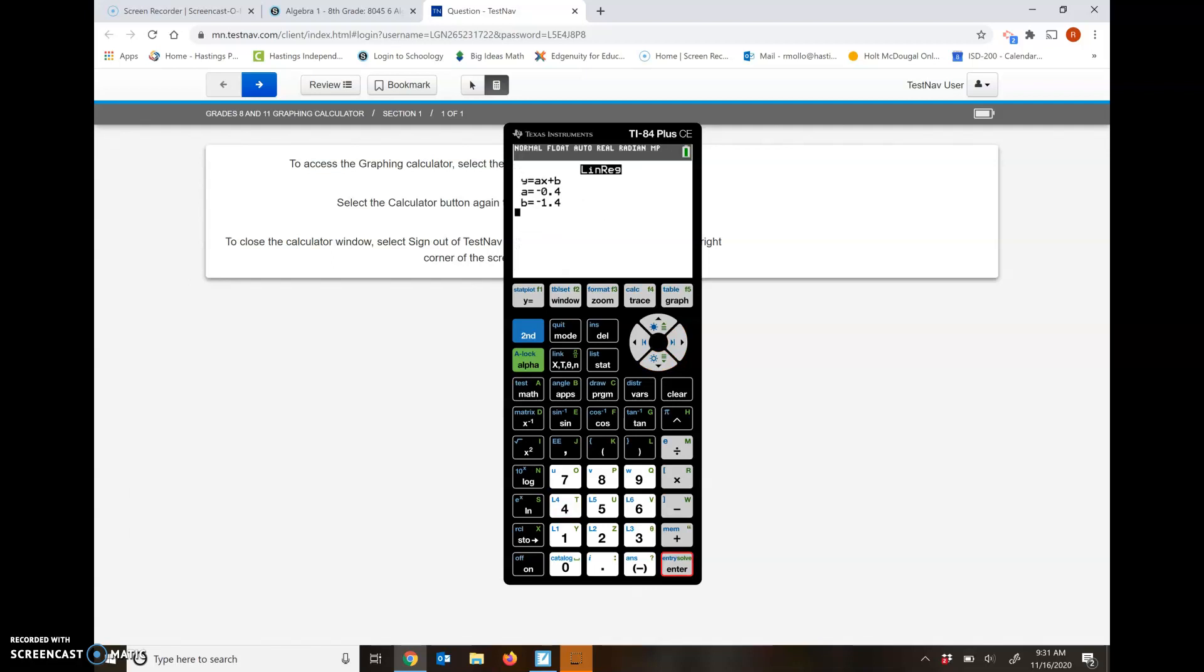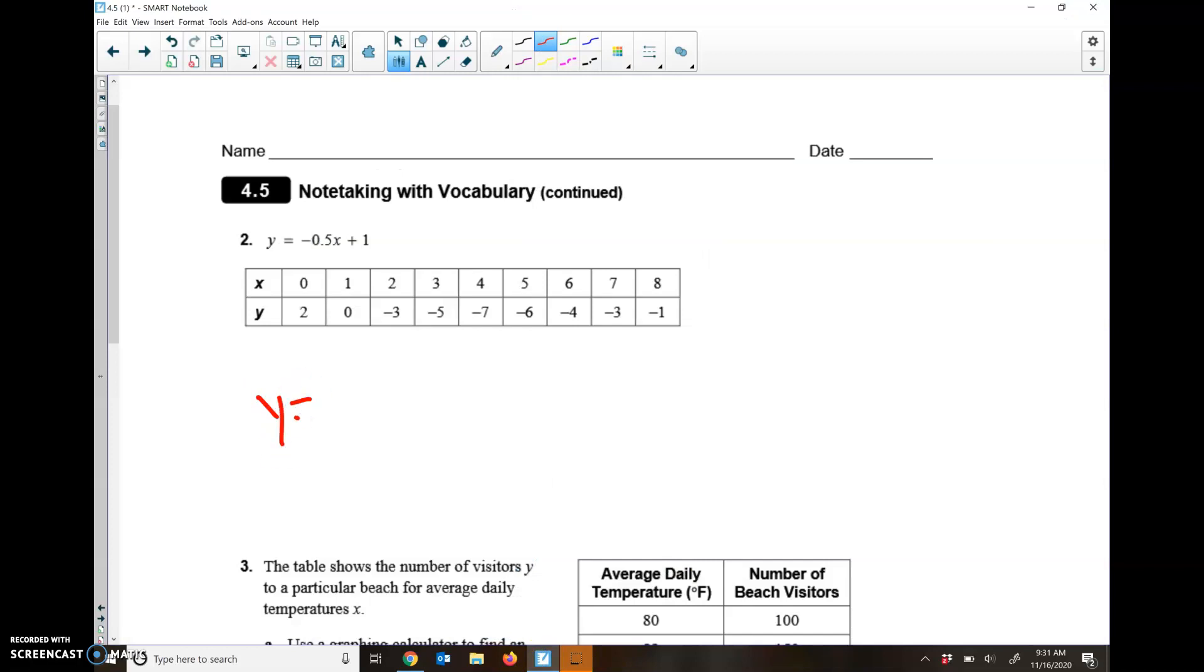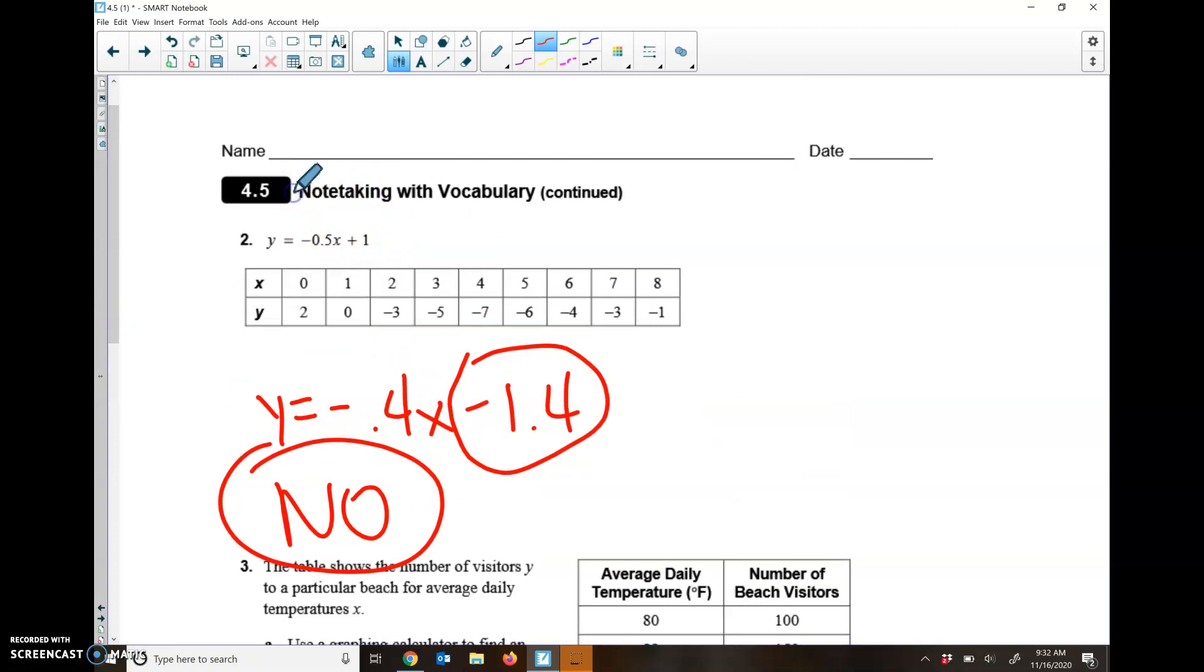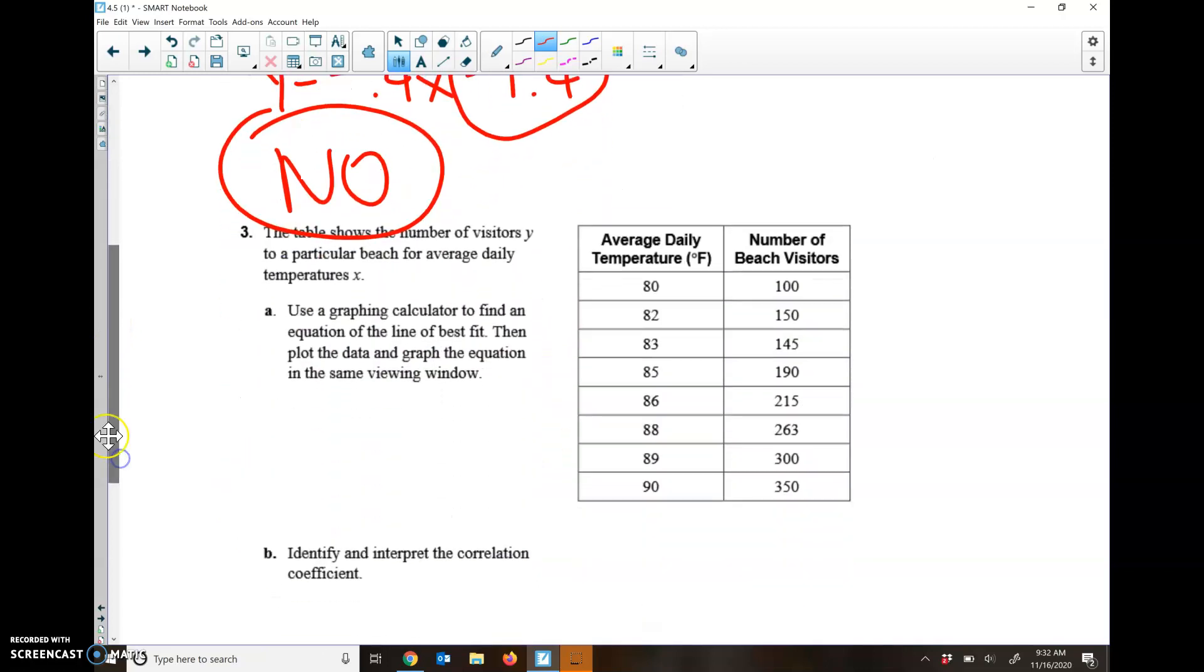Slide over to calc, calculate and we get negative 0.4X minus 1.4. So Y equals negative 0.4X minus 1.4. We got negative 0.5X, negative 0.4X, those are pretty good, but here's where it's kind of off by a lot. We got a plus 1 in the problem and a negative 1.4 in the answer, so they're off by about two and a half. I would say that's a pretty big difference. To be off by two and a half when you're talking about numbers like one, two, three, four, that's kind of a big deal. I would say Y equals negative 0.5X plus 1 is not a good equation for this line.